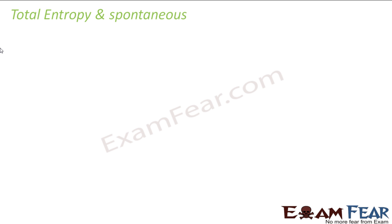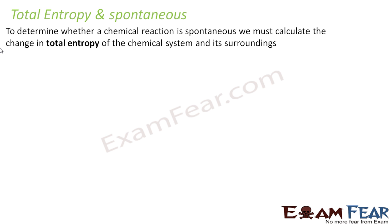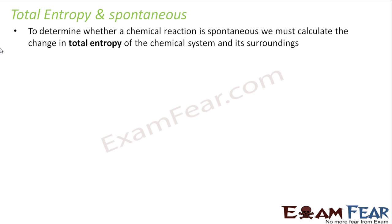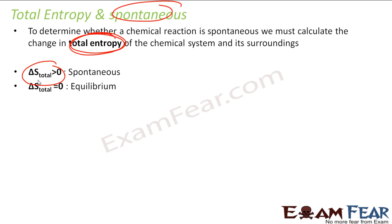So total entropy, as I told you, the reason why we studied entropy was we wanted to find the spontaneity of the reaction. To find the spontaneity of the reaction we have to find the total entropy. Please note we deal with total entropy here, not only the entropy of the chemical system, but the total entropy of the chemical system and its surroundings. If the total entropy is greater than zero, the process is spontaneous. If total entropy is zero, the system is in equilibrium. If the total entropy is less than zero, the process is non-spontaneous.